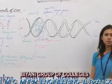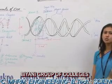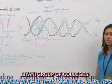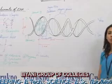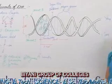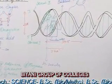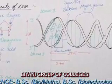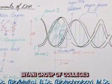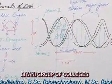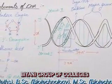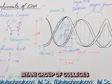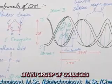DNA, deoxyribose nucleic acid, is one of the most important of all the macromolecules since it holds the responsibility of transferring the traits from one generation to another generation. DNA was first identified by Frederick Mischer and its structure was proposed by Watson and Crick.